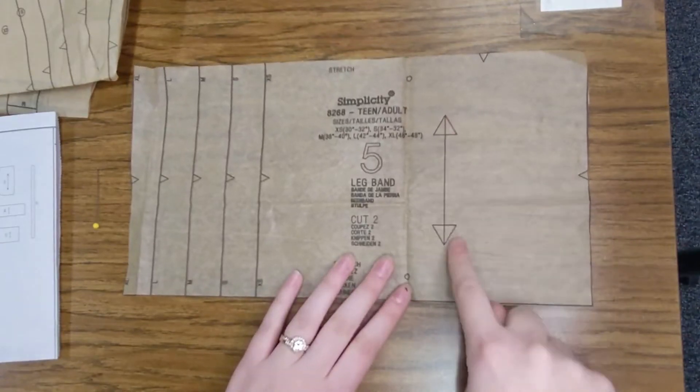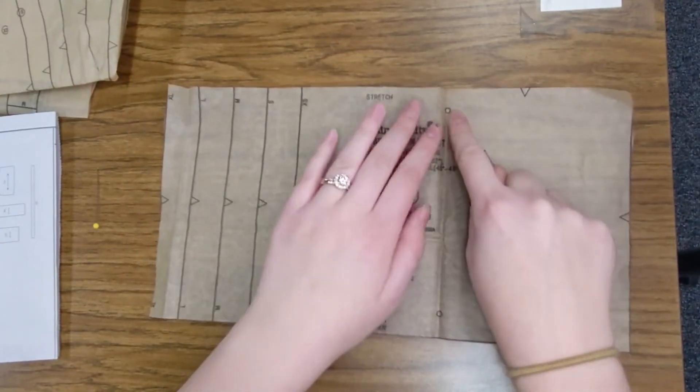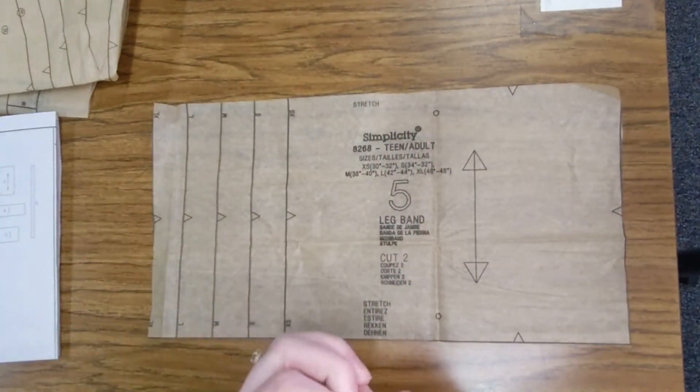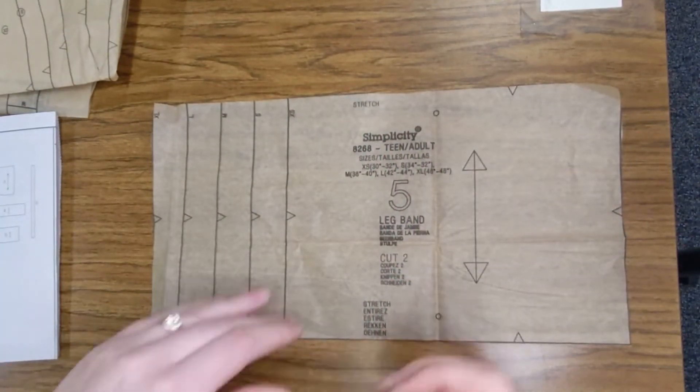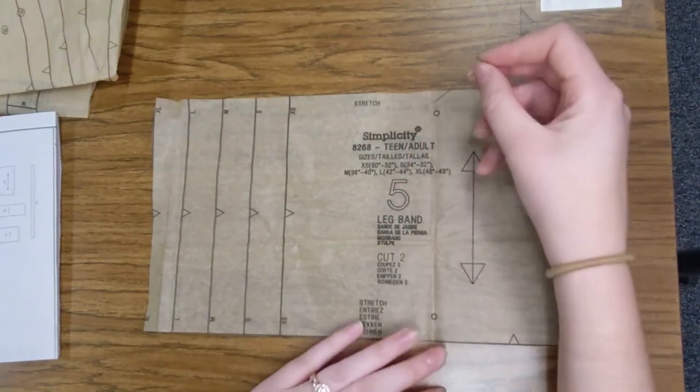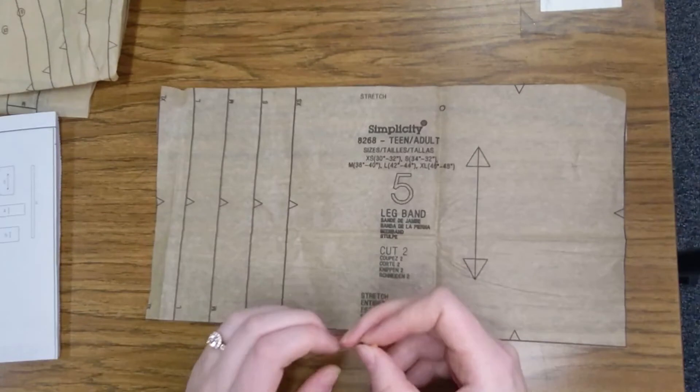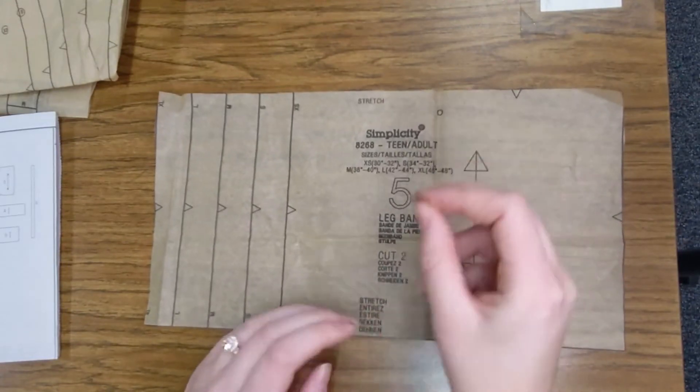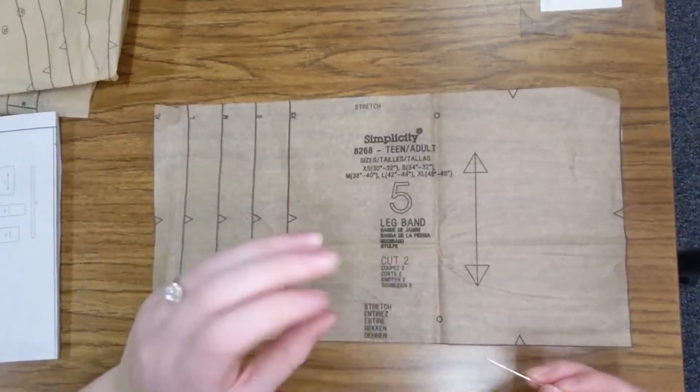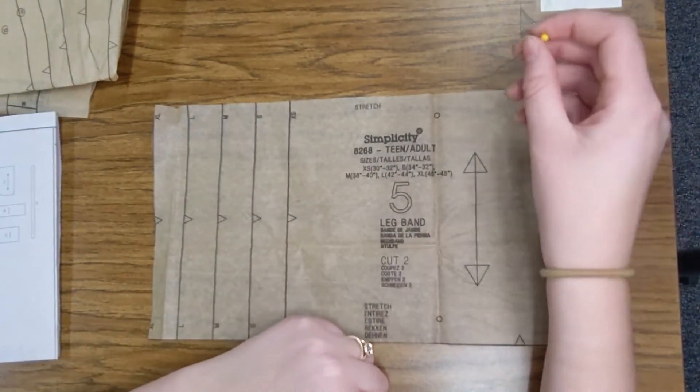We've talked about our arrow. We've talked about our notches. Now, let's talk about these dots. Dots tell me that there's going to be some sort of specific direction about this point in my instructions. So, maybe it's saying this is going to line up with a seam. Maybe it's saying I'm going to have to line this up with another dot. Maybe it's saying that I need to cut something at this dot. Whatever it is, I need to know where that dot is.